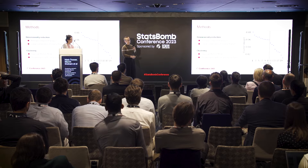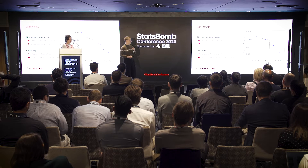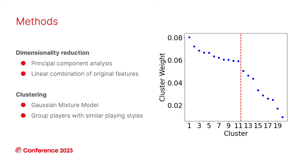I'll briefly mention the methods we used. Alongside standard data pre-processing techniques, we used dimensionality reduction — specifically principal component analysis — to reduce the size of the feature space. The clustering model we applied was a Gaussian mixture model. When applying a clustering algorithm, you generally need to choose how many clusters to group your data into, which is highly problem-specific.